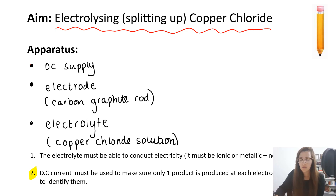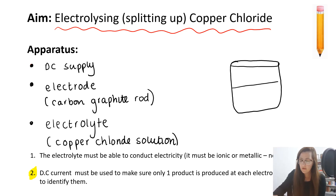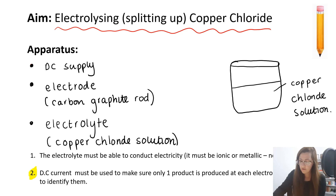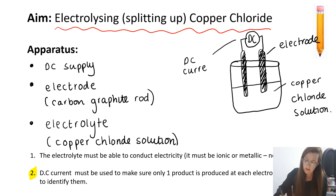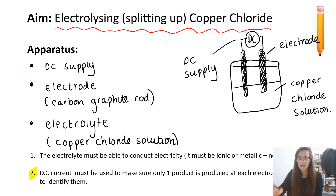So how are we going to set up this apparatus? First of all, we're going to have a beaker. Inside the beaker we're going to have our copper chloride solution. We're going to have our two carbon graphite rods in the solution, sticking out the top of the beaker, attached to a direct current supply which is pushing charge around our circuit. So we've got our electrodes and our direct current DC supply — and that is how we set up our experiment.